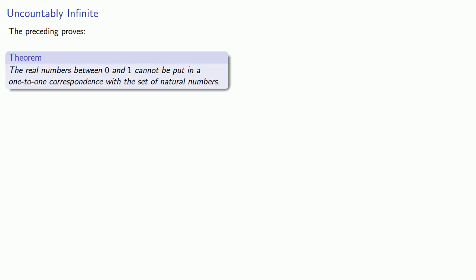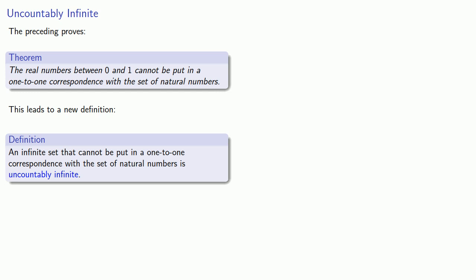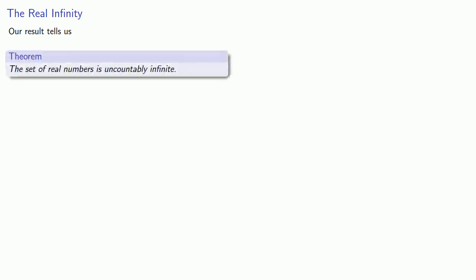This proves a very important theorem: the real numbers between 0 and 1 cannot be put in a one-to-one correspondence with the set of natural numbers. This leads to a new definition: an infinite set that cannot be put in a one-to-one correspondence with the set of natural numbers is uncountably infinite. Since the real numbers between 0 and 1 are a subset of all real numbers, the set of real numbers is uncountably infinite — though we do need to establish that the set of real numbers is indeed infinite.